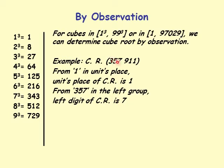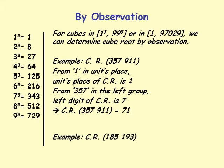From 357 in the left group, left digit of the cube root is 7. So cube root of 357911 is 71. Cube root is 71.